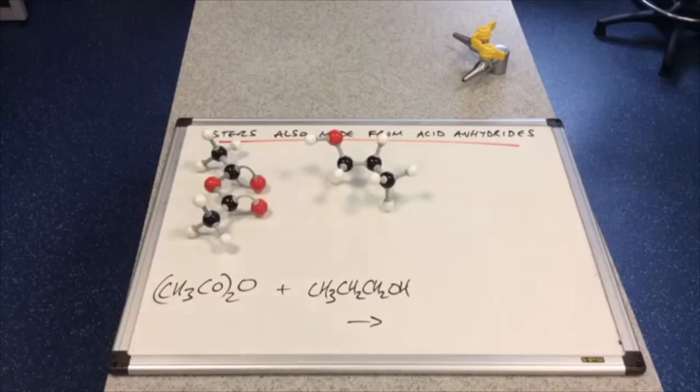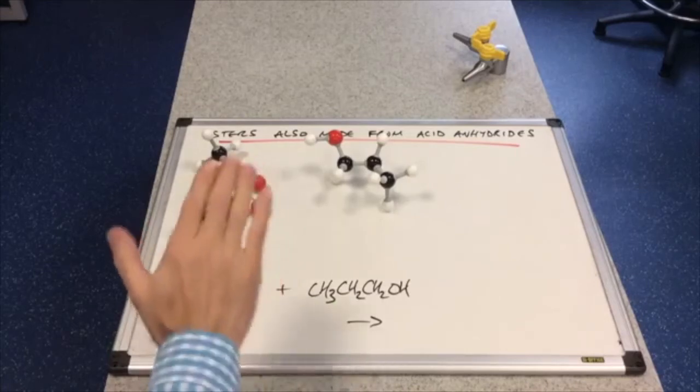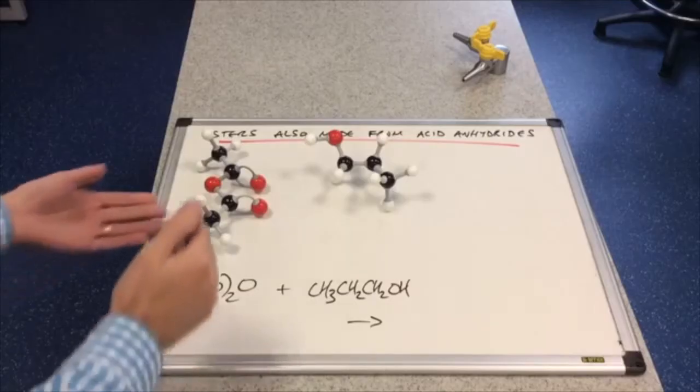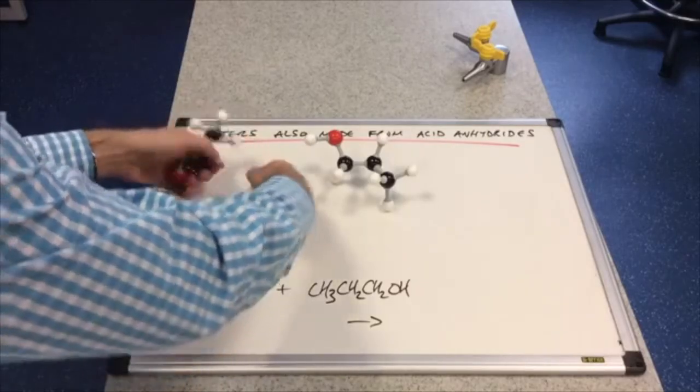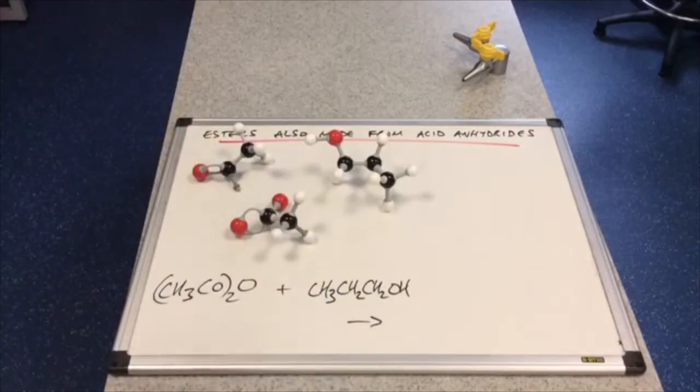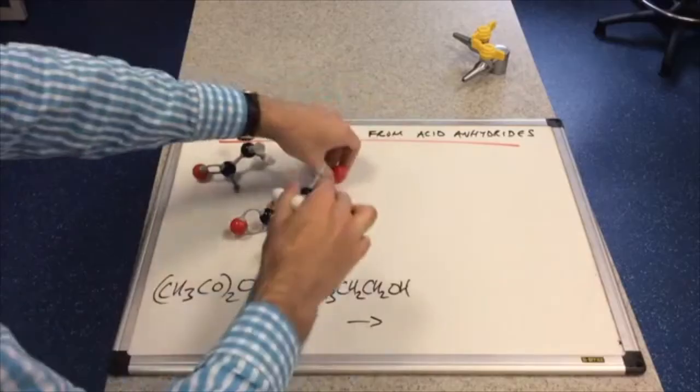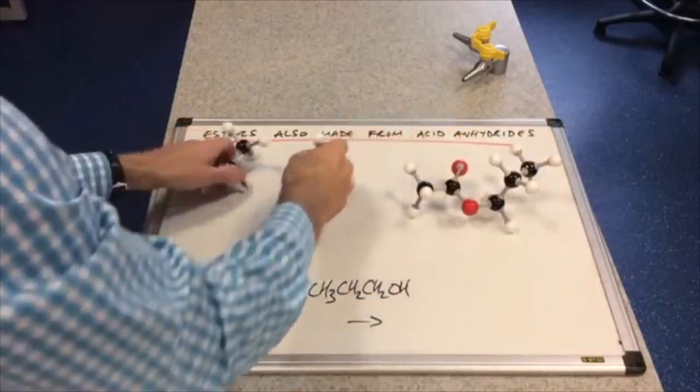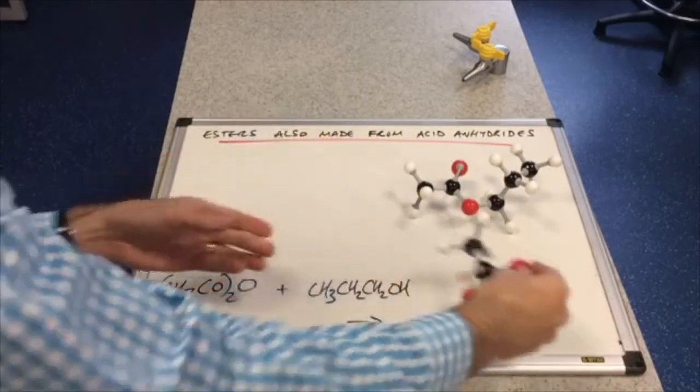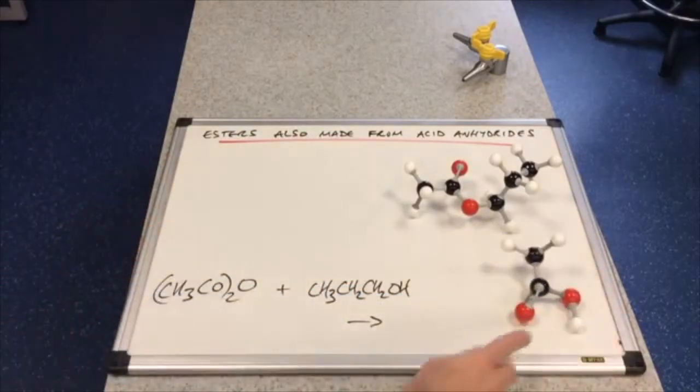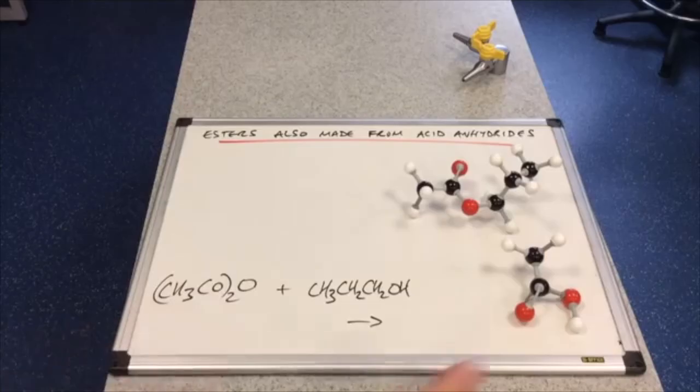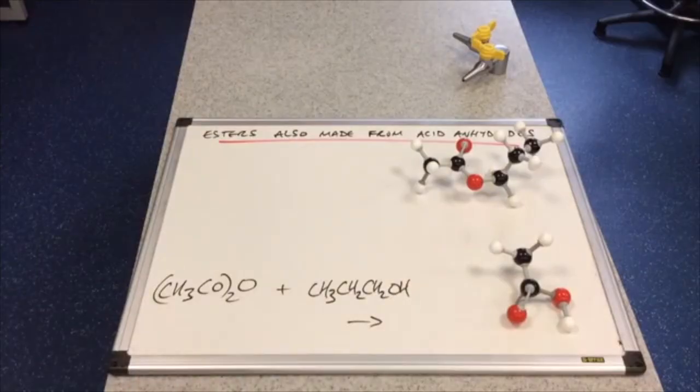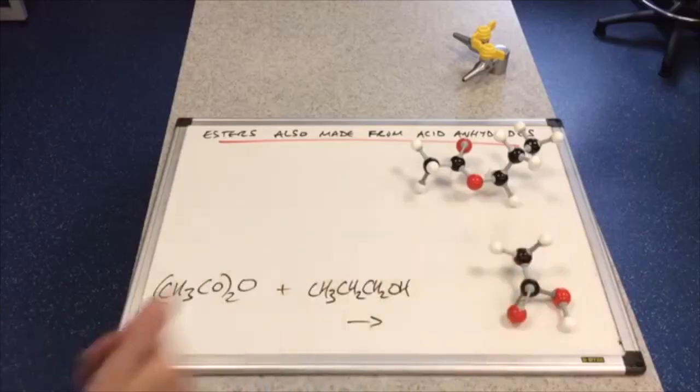So let's have a go at making an ester then from an acid anhydride. So we've got ethanoic anhydride and 1, 2, 3, propanol, propan-1-ol. So what are we going to do? We need to break this bond here. And we need to break this bond here. There's the ester. And we don't get water, we get a carboxylic acid. And which carboxylic acid will we get from ethanoic anhydride? We'll get ethanoic acid. So esters made from acid anhydrides produce an ester and a carboxylic acid.